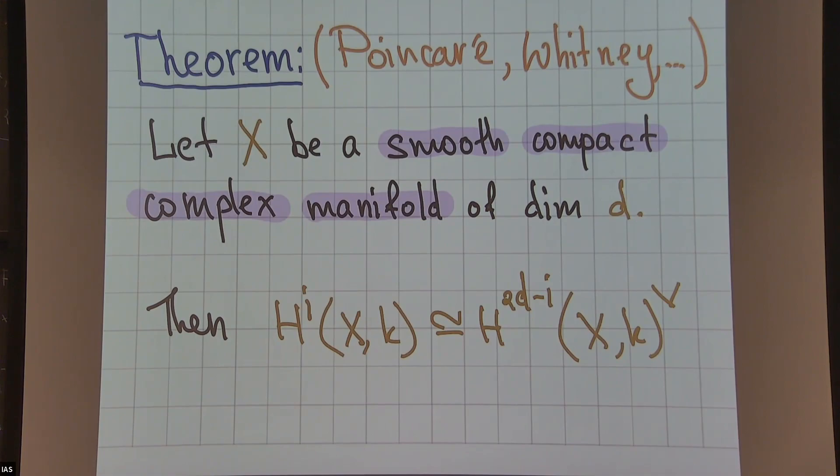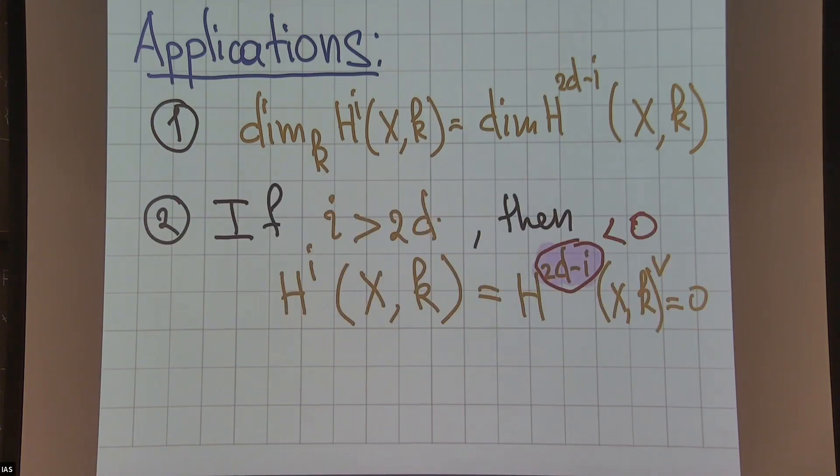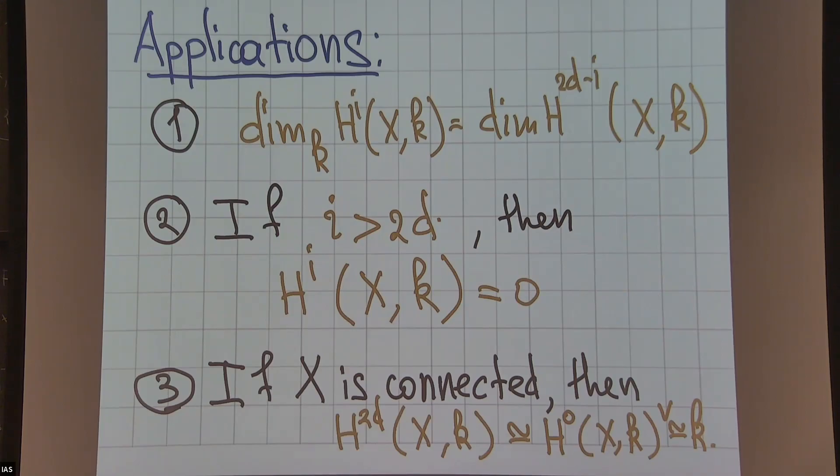Let me give some direct consequences of this fact. First, if you have duality, you have equality of dimensions. The second implication is the vanishing result: if i is bigger than twice the dimension, then H^i is dual to H^(2d-i) and this number is negative, so this homology group is zero. The last direct consequence I want to mention is that if X is connected, then we know the top homology group directly: it's dual to H^0, and H^(2d) is always just a one-dimensional vector space.